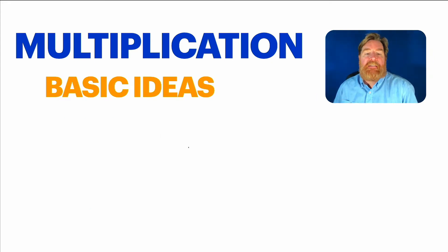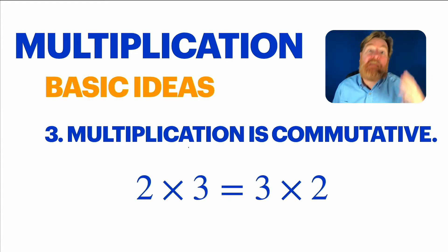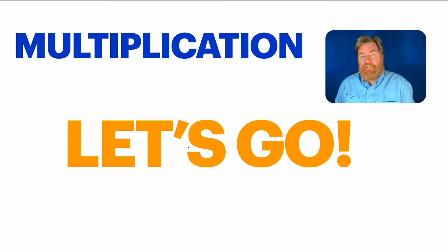The third basic idea is that multiplication, just like addition, is commutative. The order in which you multiply the numbers doesn't affect the result. So for example, two times three, you get six. But you also get six if you do three times two. So we can commute the factors.